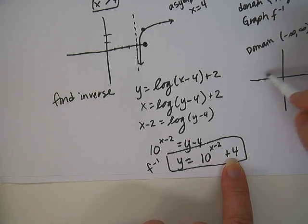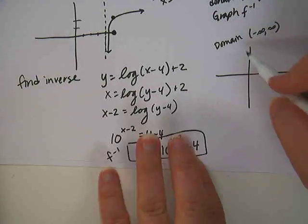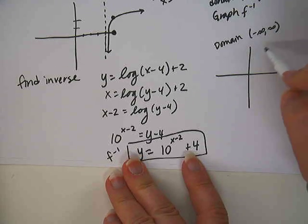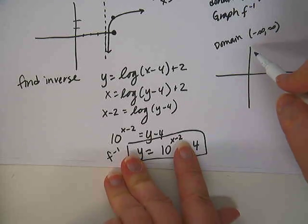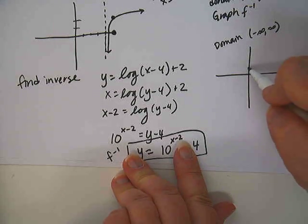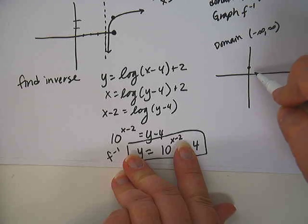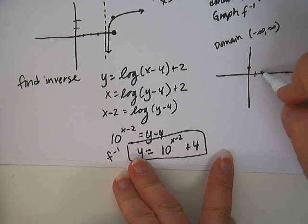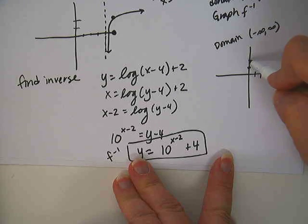And then let's graph it. So the graph will take our exponential function that normally would be like in this area right here, and it'll move it up four and right two. So the point that's normally at zero, one will move right four.